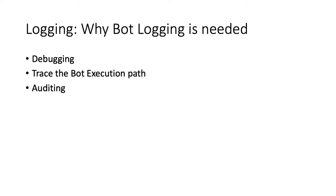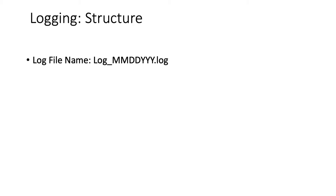Suppose your bot has run and after seven days you want to see what happened — how did the bot do and what path it took. It will be very useful to audit that. The typical file name for logging will be log underscore month-date-year, so the format is log_MMDDYYYY. Every time a bot runs you create a log file — this way you keep one log per day, and the next day it creates a new log with a different date.